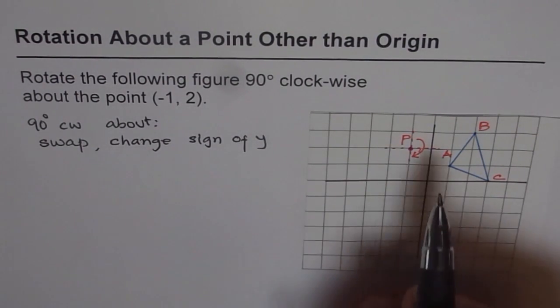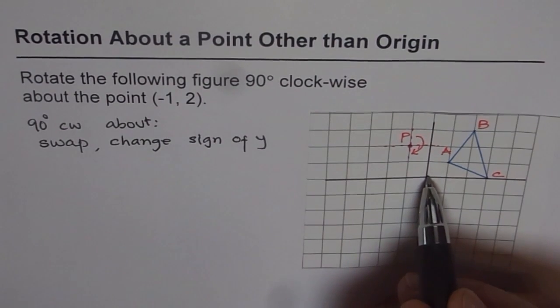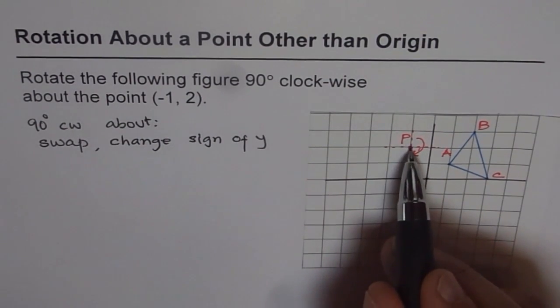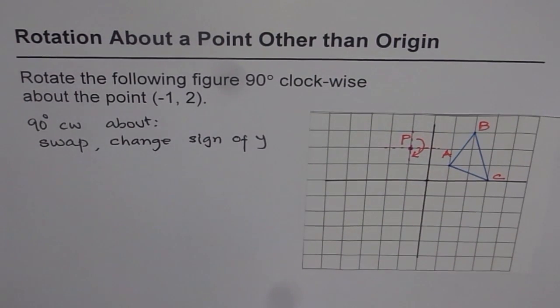Now in this case, we are not doing rotation about the origin, right? We are doing rotation about a point P which is not on the origin. Now how to solve this problem?